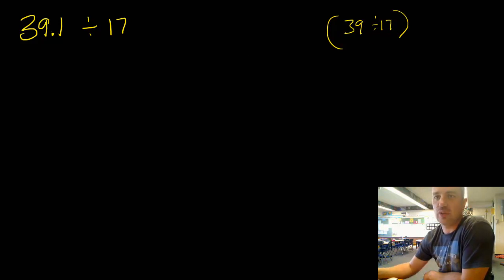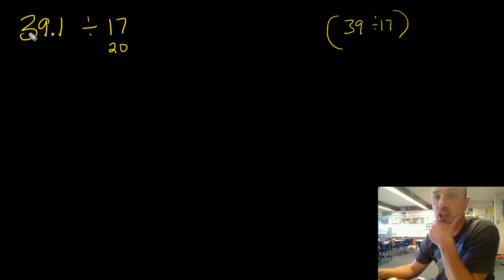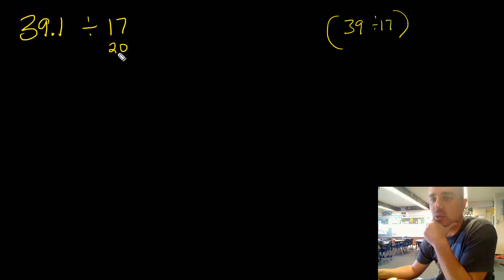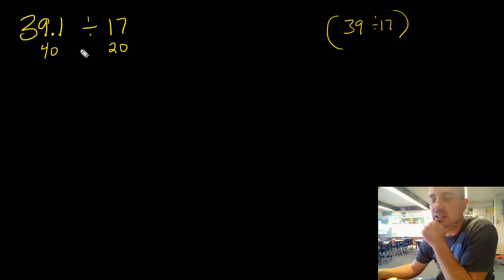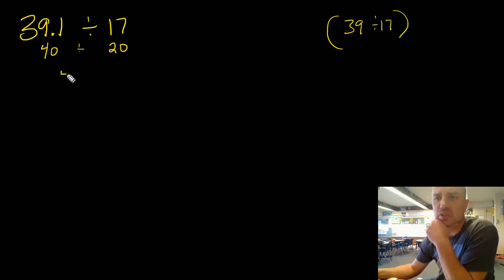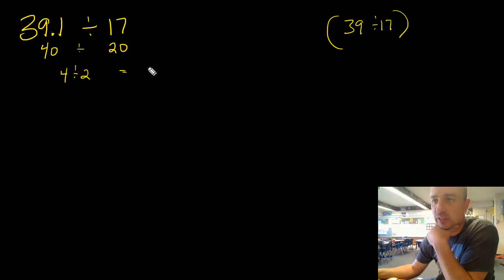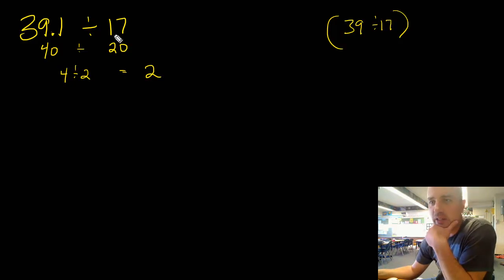That's all we're going to do here — the same thing. We can round 17 to 20, and then I need to know: looking at 39, what can I round it to that would be easy to divide by 20? That's definitely going to be 40. I can use mental math: 40 divided by 20 — or simplify to 4 divided by 2 — and I get an estimated quotient of 2.